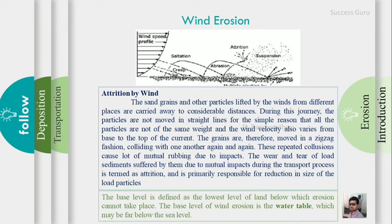The base level of erosion for wind is the water table level. Wind erosion proceeds until it reaches the water table. When the water table is at the bottom, wind erosion stops. This is the base level of erosion.